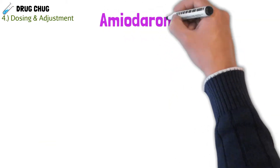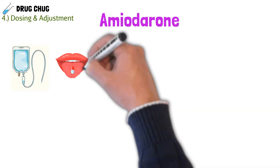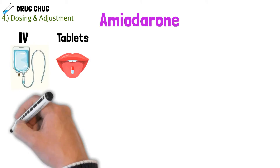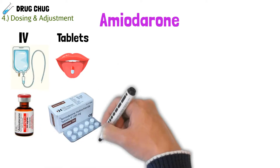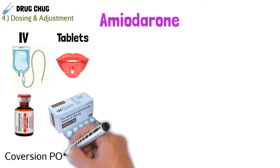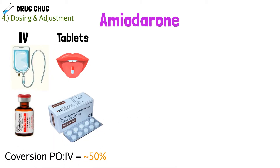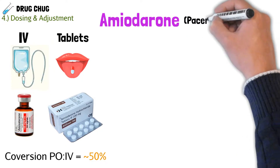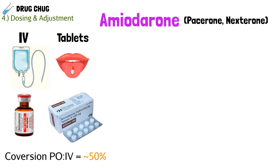Now we need to talk about dosing, adjustments, and the available formulations. Amiodarone comes in IV and tablet dosage forms, meaning we could use it in the ICU or have a patient go home with tablets. One thing to note: there is a conversion — going from PO (by mouth) to IV is about 50%, though this varies from hospital to hospital. And because amiodarone has a long half-life, we still need to monitor the patient after the conversion. Amiodarone comes in multiple brand names; two of the most common are Pacerone and Nexterone. Pacerone is kind of like pacemaker, so you know it's for an arrhythmia.